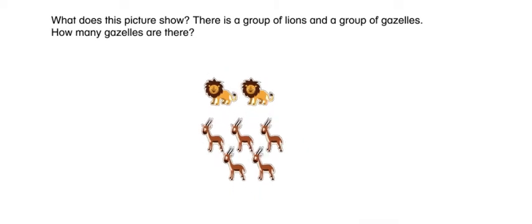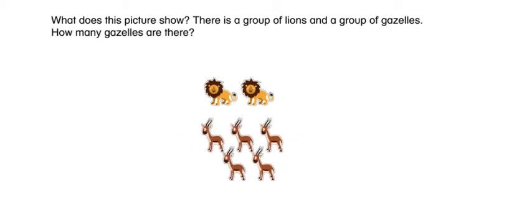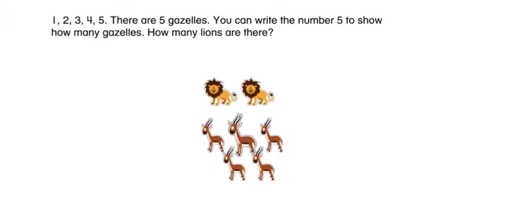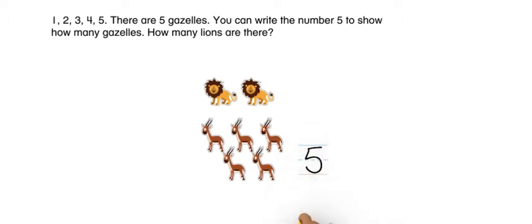What does this picture show? There is a group of lions and a group of gazelles. How many gazelles are there? One, two, three, four, five. There are five gazelles. You can write the number five to show how many gazelles.